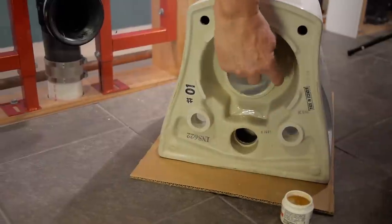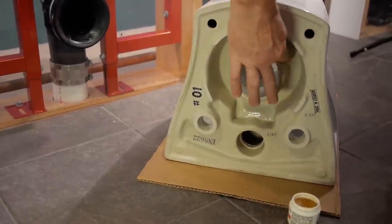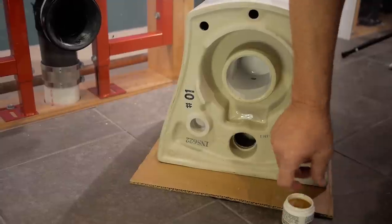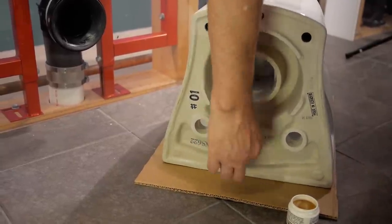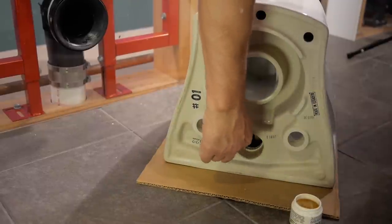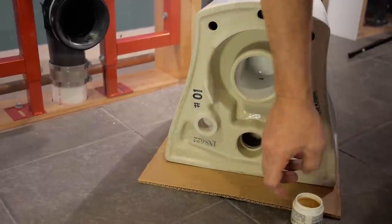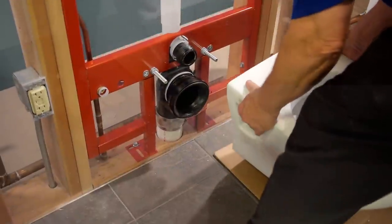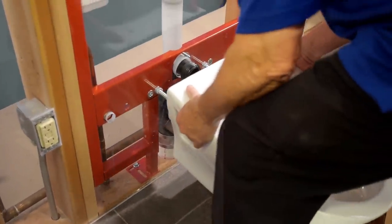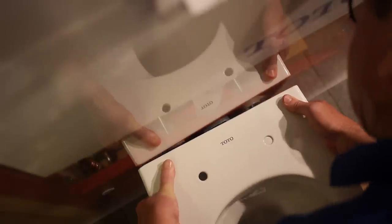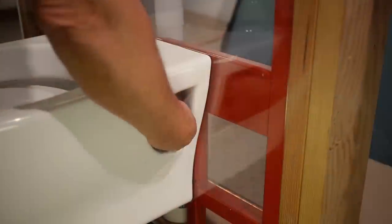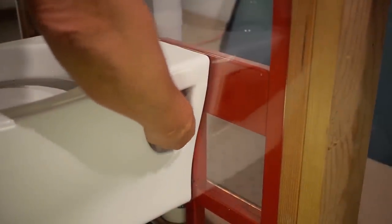Step 7: Now comes the toilet bowl. Line it up with the pipes and mounting studs and use the hardware to secure the bowl.